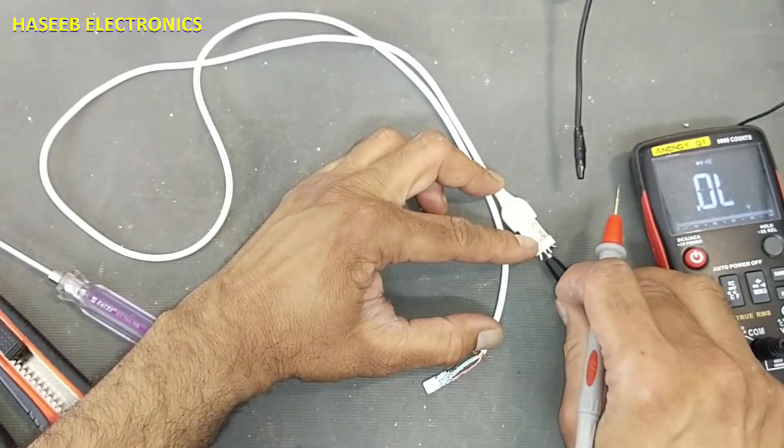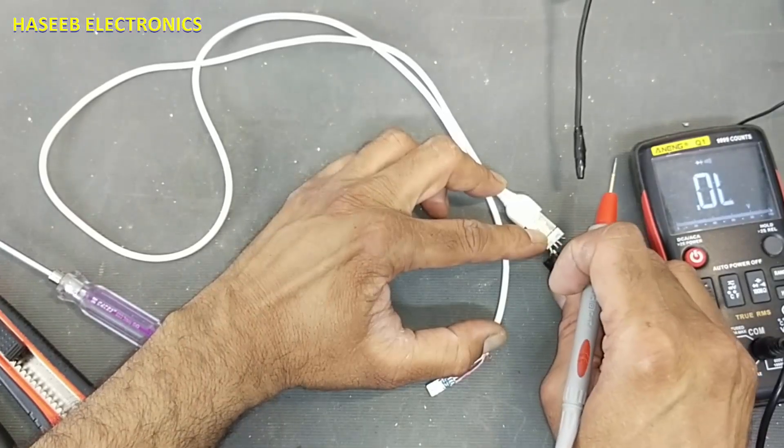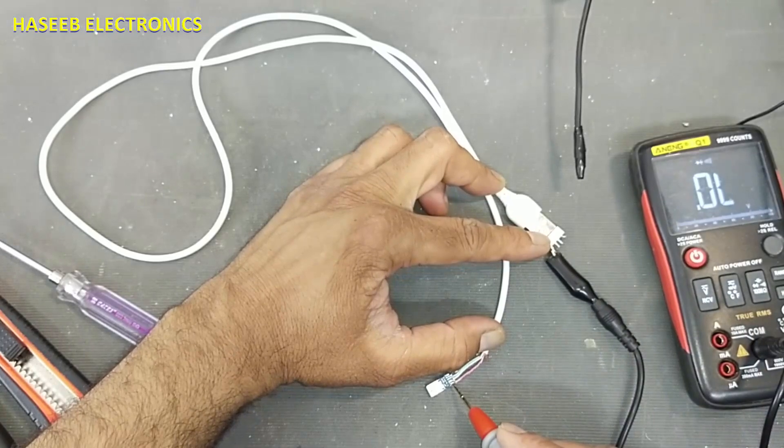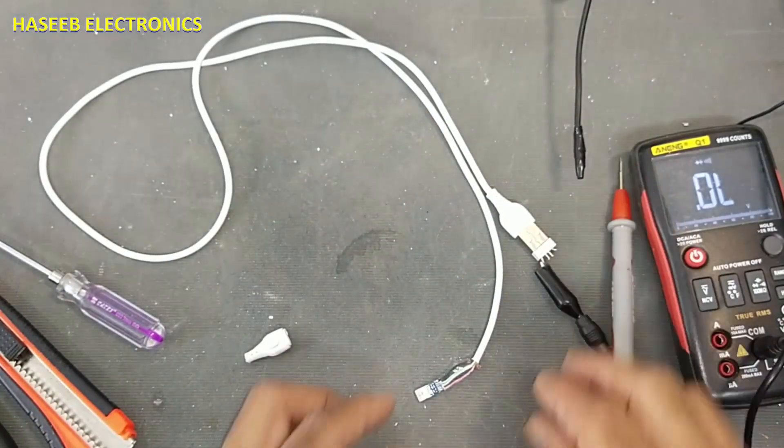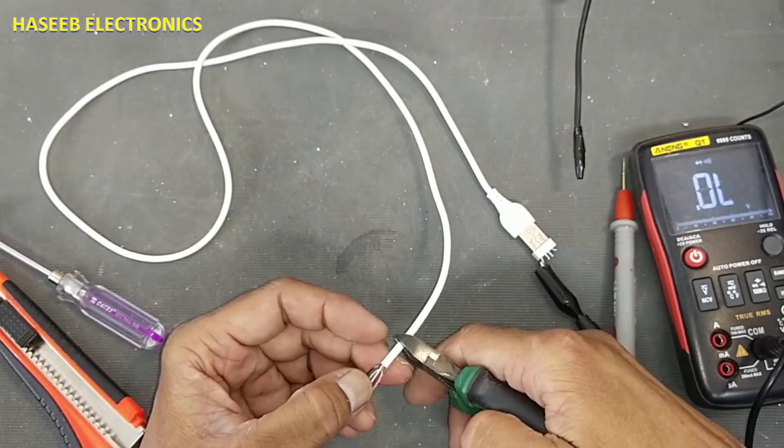Third pin, it is reaching here and there is no cross connection. Move to the positive pin, that is here. Connect here. It is not giving continuity. Now we can remove and install it another time.